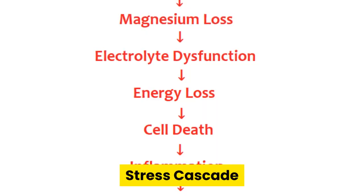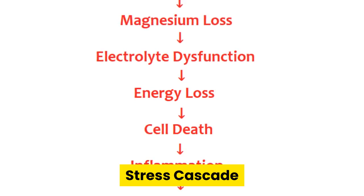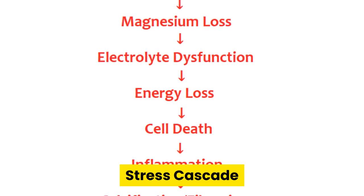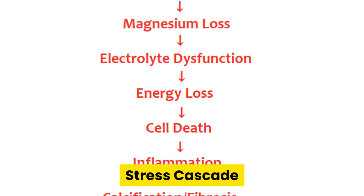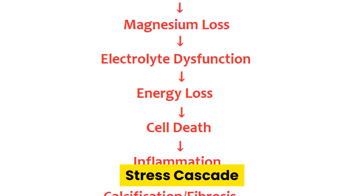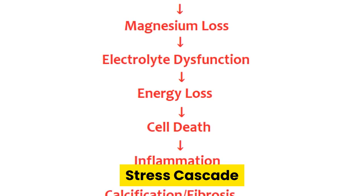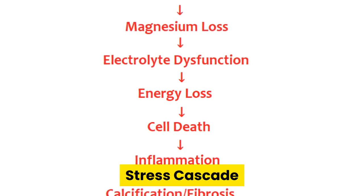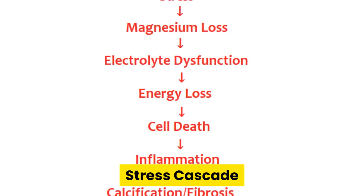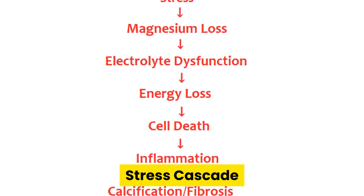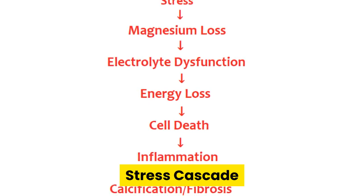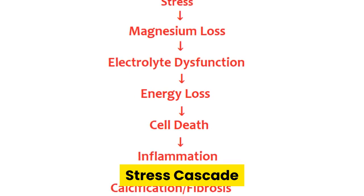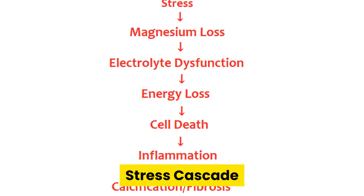Morley Robbins thinks stress is behind everything, which resonates with the acute conflict shock in Dr. Hamer's work. He has also suggested many of his clients use EFT or similar modalities to deal with stress. If you look at Morley Robbins' approach, you can see the stress cascade: stress leads to magnesium loss, which leads to electrolyte dysfunction, which leads to energy loss, which leads to cell death, which leads to inflammation, and finally to calcification and fibrosis — which is believed to be one of the reasons behind hair loss.